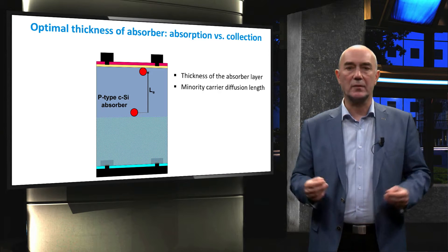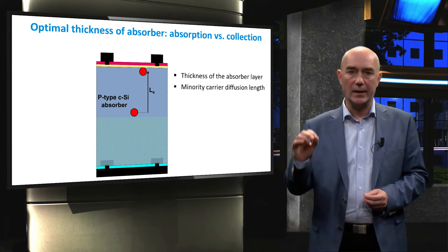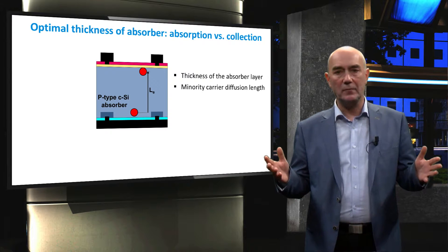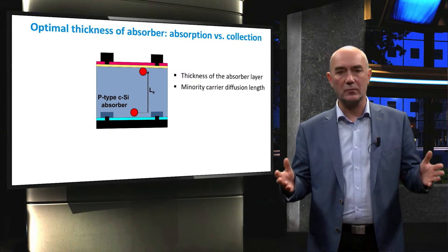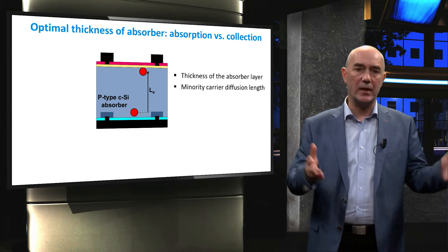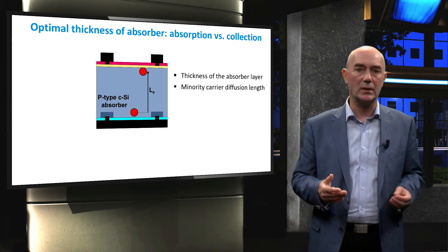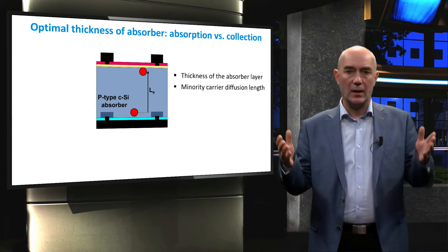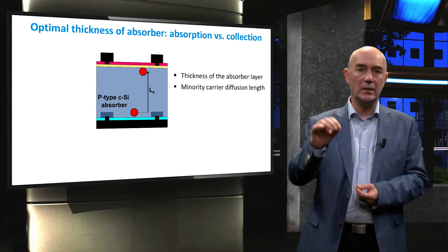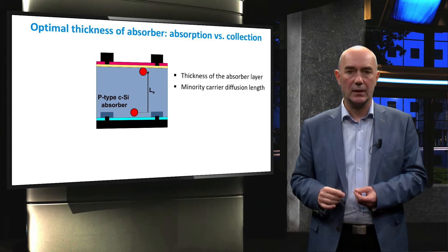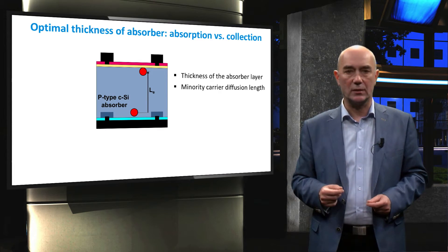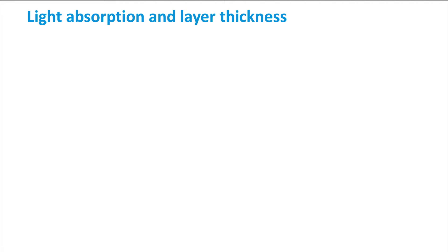As a result, the thickness of the absorber layer has to be optimized and must be smaller than the minority carrier diffusion length. The electron diffusion length is generally in the range of 100 to 300 microns. That's why a practical crystalline silicon solar cell has a P-type wafer with a thickness in the order of 100 to 200 microns. When optimizing the absorber thickness, we must know the quality of the absorber — in this case the silicon wafer — which is expressed in the minority carrier lifetime or diffusion coefficient.